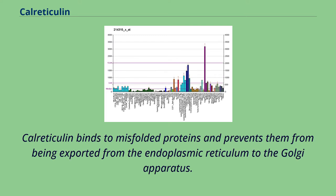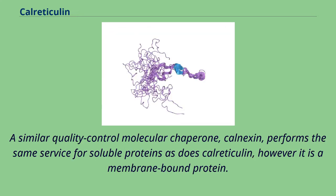Calreticulin binds to misfolded proteins and prevents them from being exported from the endoplasmic reticulum to the Golgi apparatus. A similar quality control molecular chaperone, calnexin, performs the same service for soluble proteins as does calreticulin; however, it is a membrane-bound protein.